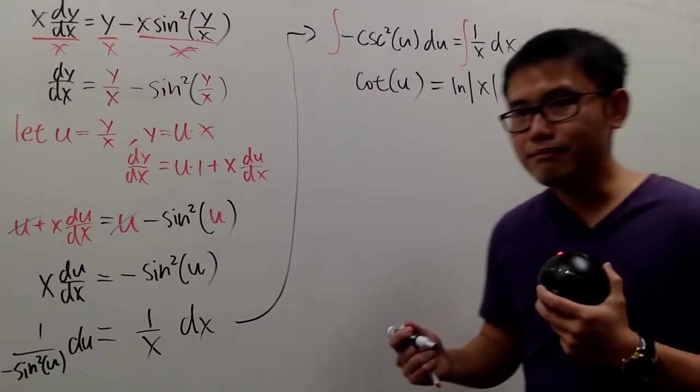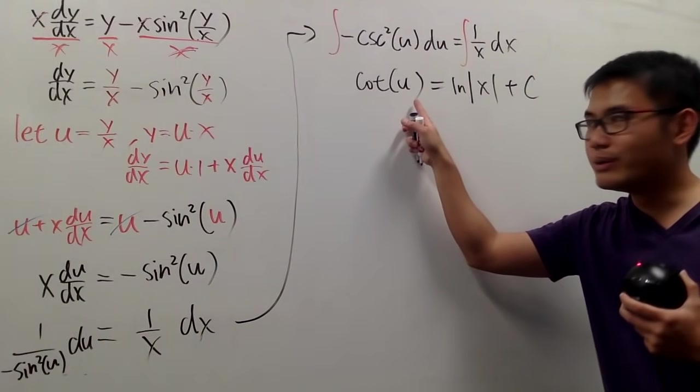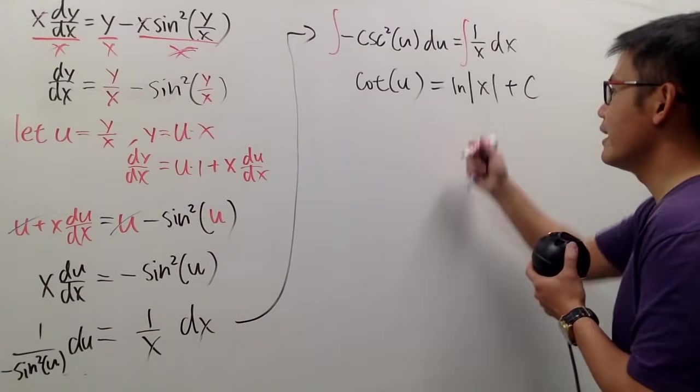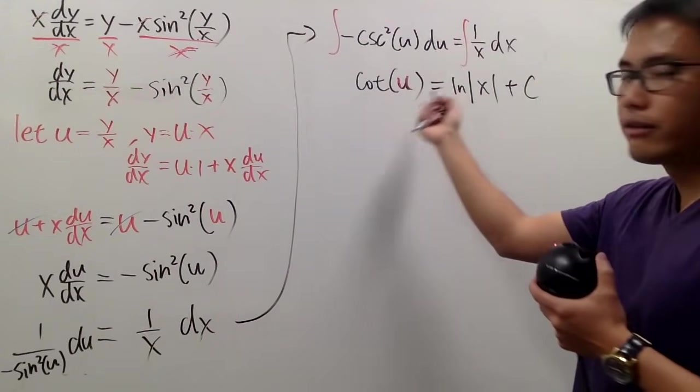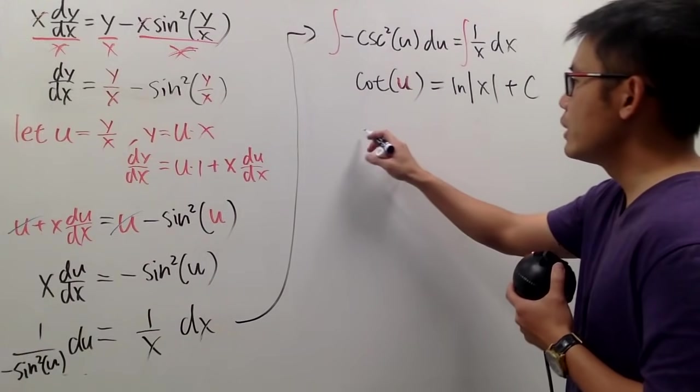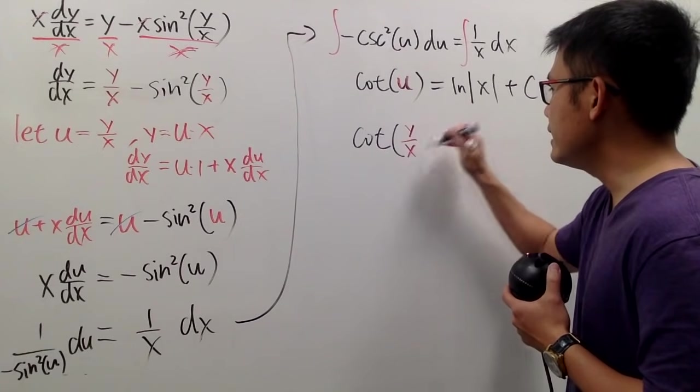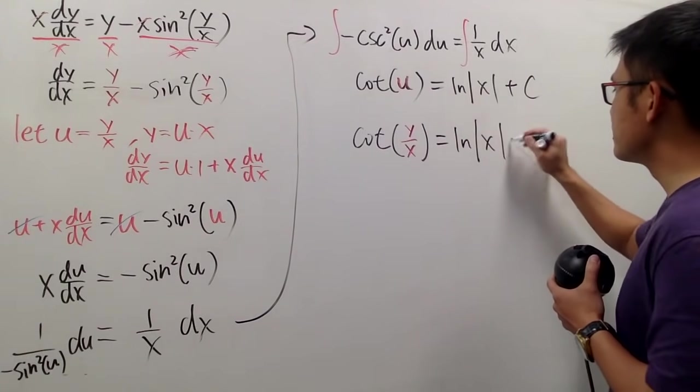Are we done? Kind of. Not really though, because what exactly is the u? u is y over x. So that's the last touch. That's the final touch right here. So look at the u right here. I just have to put this back. So here we have cot y over x, and this is equal to ln absolute value of x plus c.